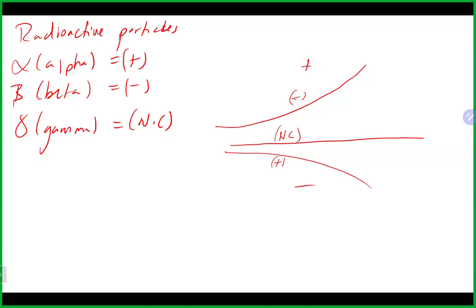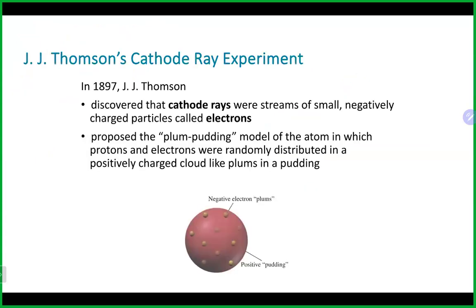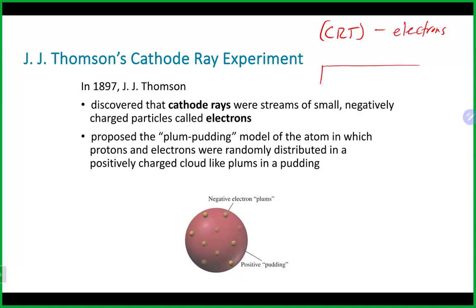One of the earliest experiments that helped us understand the atom was J.J. Thompson and the cathode ray tube, sometimes abbreviated CRT. This was used to explore electrons. The CRT is a tube with a positive charge on one end and a negative part on the other. It produces a beam of negatively charged particles — electrons — that head toward the positive side of the tube.